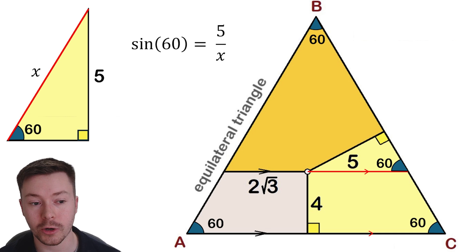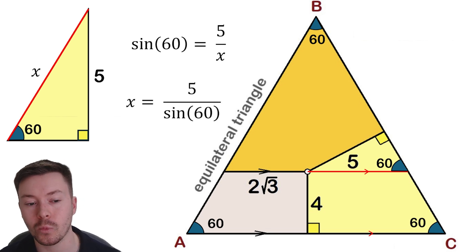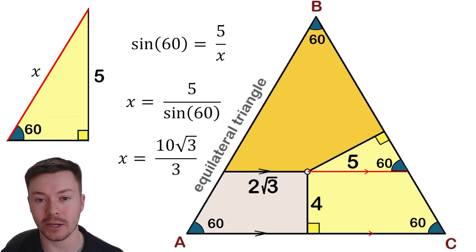That means using trigonometry we've got the opposite and the hypotenuse, so sine 60 is equal to the opposite over the hypotenuse which is 5 over X. And if we rearrange that, we get X is equal to 5 over sine 60. That gives us an answer of X being 10 root 3 over 3.